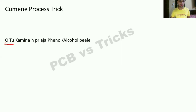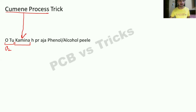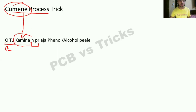Let's move on to our starting two words. O2 is our reactant — that is oxygen. Now the keyword is 'kamina.' This covers three things: first, the process name — the Cumene process; second, the name of the reactant — Cumene; and third, H-P-R, which means Cumene hydroperoxide, our intermediate. So 'kamina' gives us three words, and from that we get our intermediate: Cumene hydroperoxide.